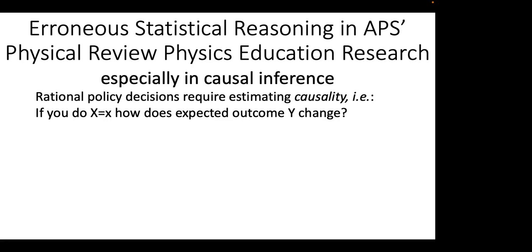Hi everybody. This looks like a small, intimate group, which makes it particularly easy for anyone to jump in with comments or questions. The core talk is only about 21 minutes, so we have plenty of time for short comments or questions during the main part, or extended discussion afterwards. The talk is about erroneous statistical reasoning in the APS publication Physical Review Physics Education Research, and related issues with the APS on similar research. The type of statistical reasoning I'll focus on is causal inference, with some discussion of other statistical errors.